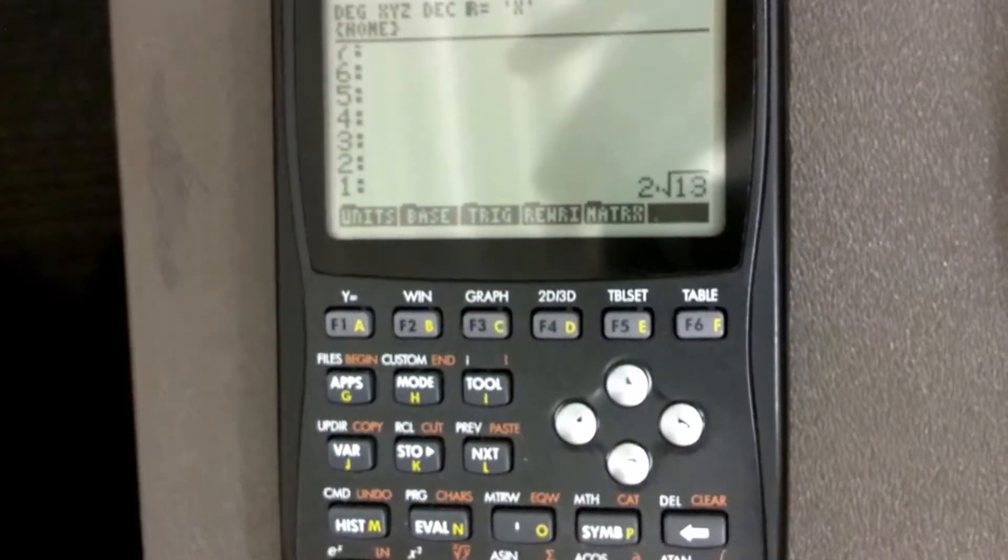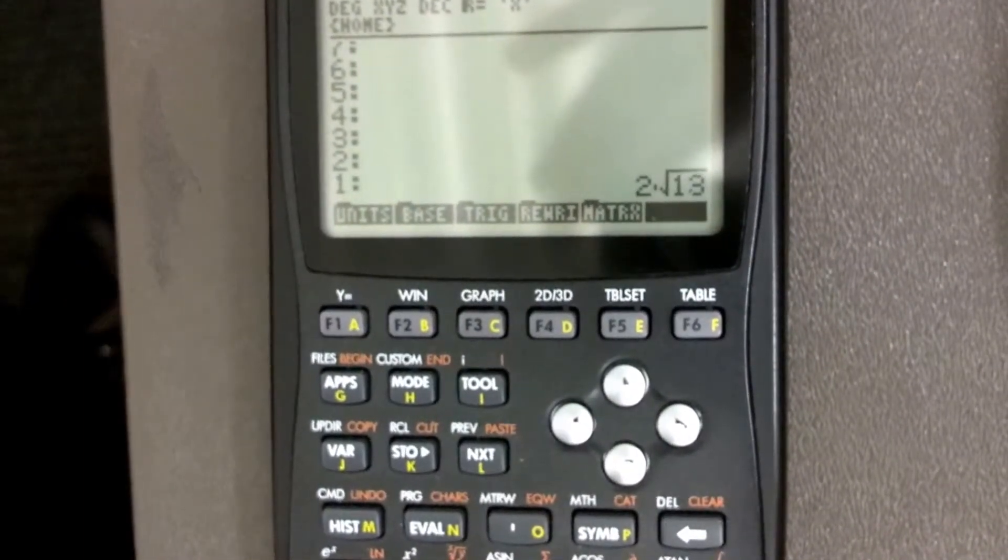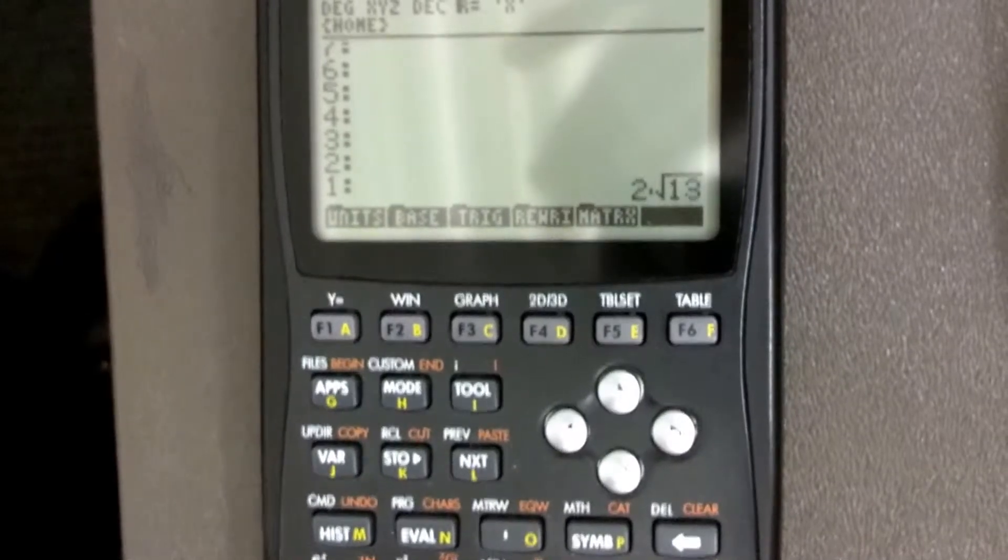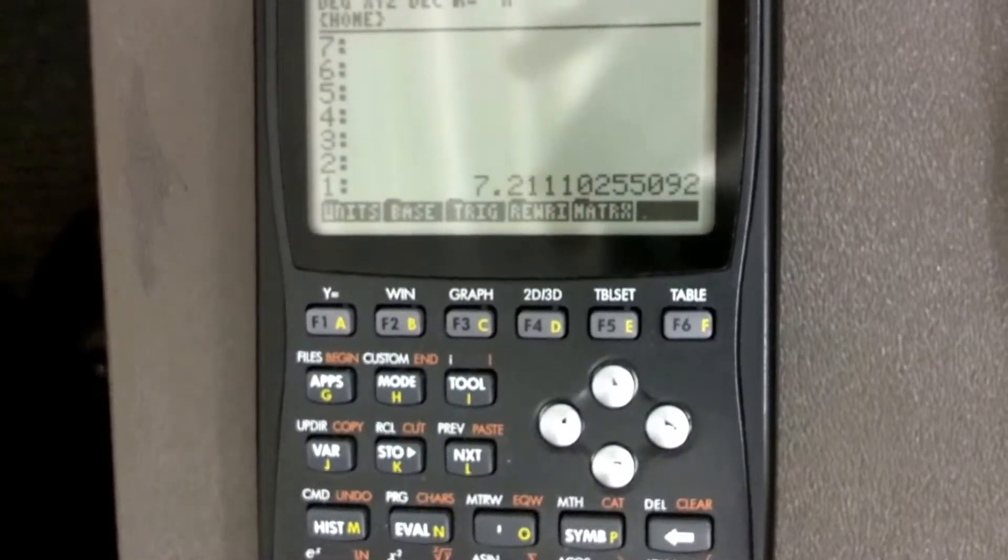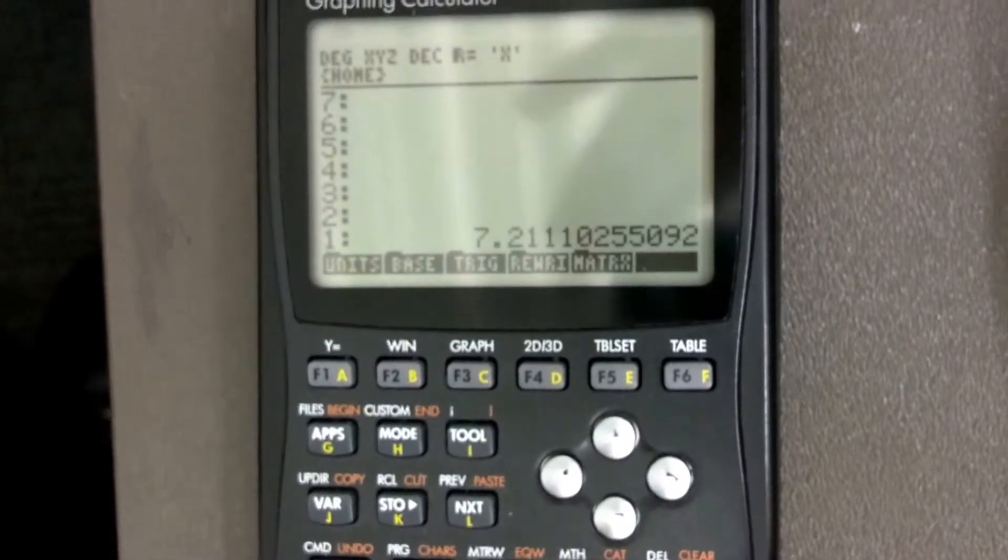Wow, and it automatically simplifies it. Now because we're going to be doing things in decimal, I'm going to convert this to a decimal number. And so there's my 7.21, which is my magnitude.